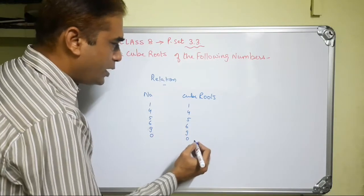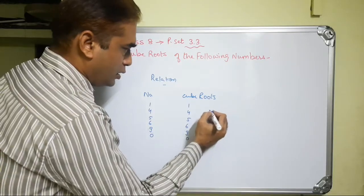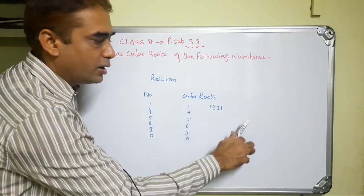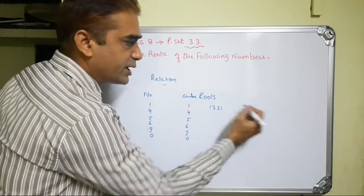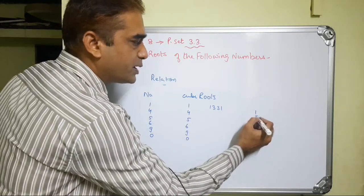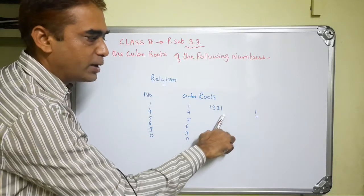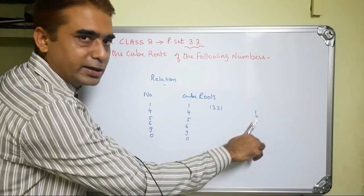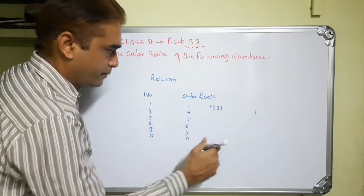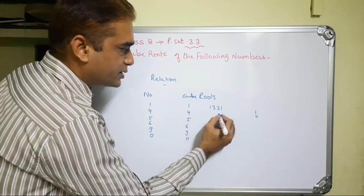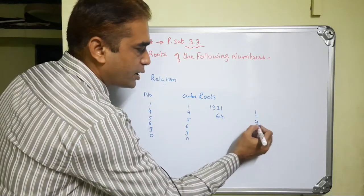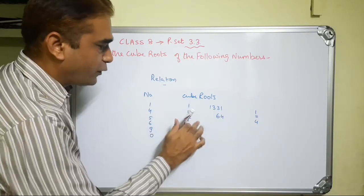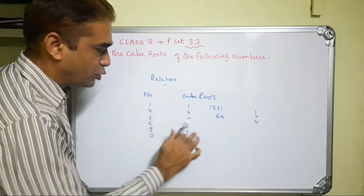For example, if the number is 1331, then in its cube root the unit place digit will also be 1. If the number at the unit place is 1, then in the cube root also the number at the unit place will be 1. If the number is 64, the digit at the unit place is 4, so the cube root also has 4 at the unit place. Similarly, if it is 5 then 5, if 6 then 6, if 9 then 9, if 0 then 0.